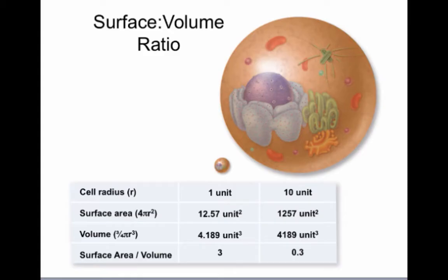If we calculate the ratio for each cell of its surface area to its volume—so we divide the surface area by the volume of the cell—the small cell has a surface area to volume ratio of three units.